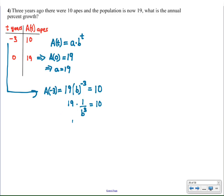And then I'm going to multiply both sides by b cubed. It's like fraction busting. Divide both sides by 10. And then I take the cube root of both sides. And that gives me my b value, 1.2386.